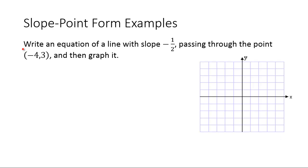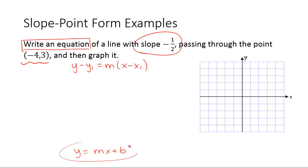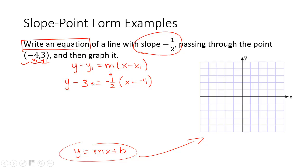Let's take a look at an example: write an equation of a line with slope negative one-half that passes through a given point. So instead of a y-intercept, we have a point. We take our slope-point formula and our goal is to fill it out and get it into y equals mx plus b format, because that's the easiest format to graph from. Let's identify x₁ and y₁ from our point, fill in m as negative one-half. We have x minus negative 4, so don't forget to put the two negatives, and y minus 3.